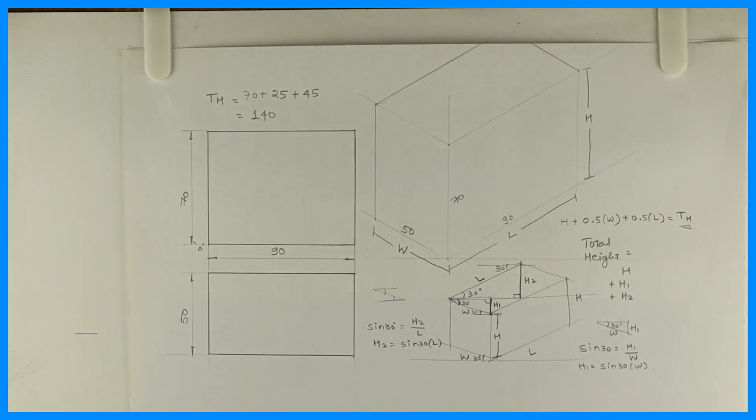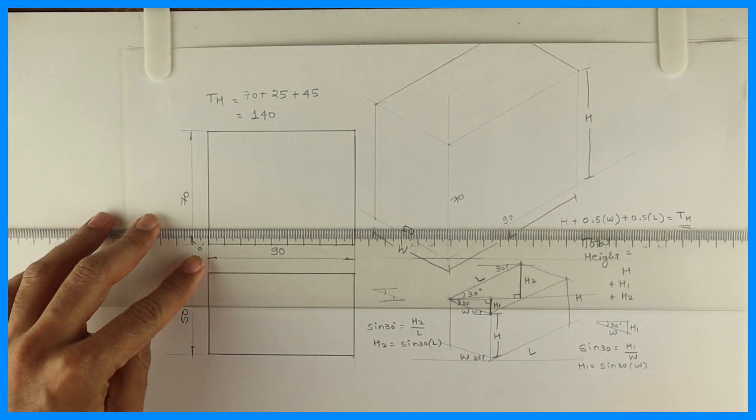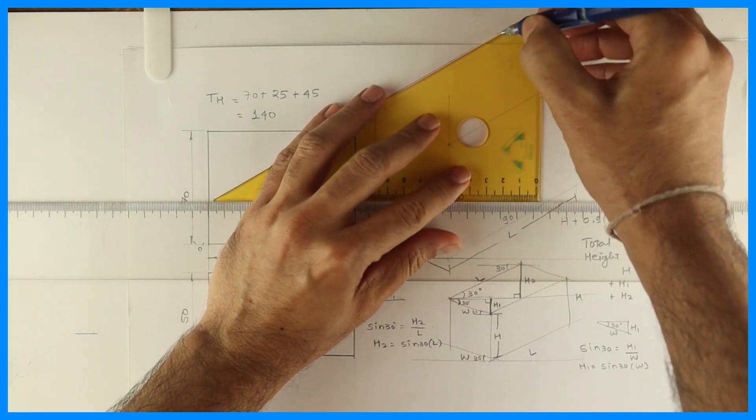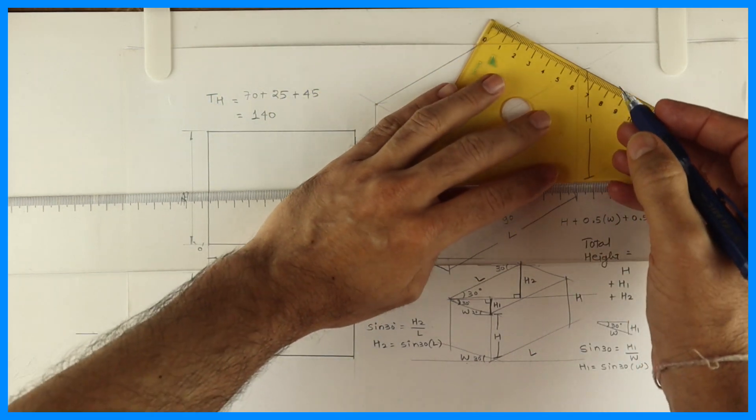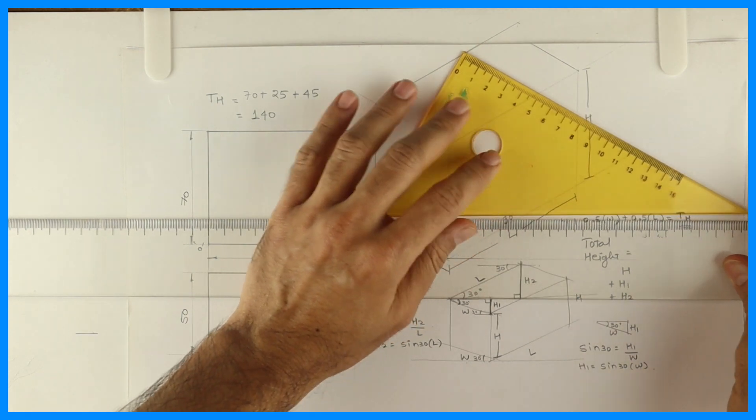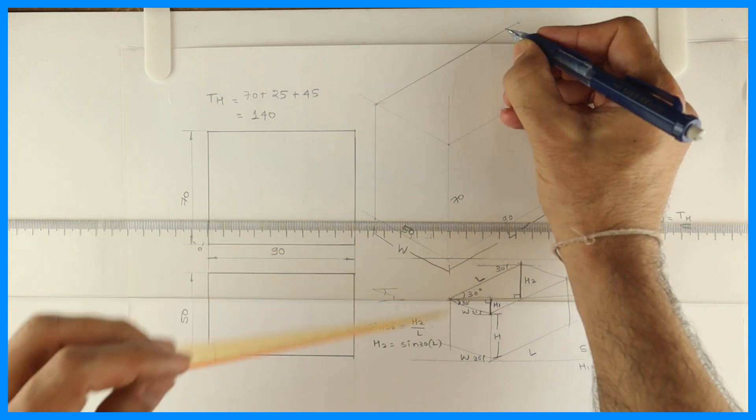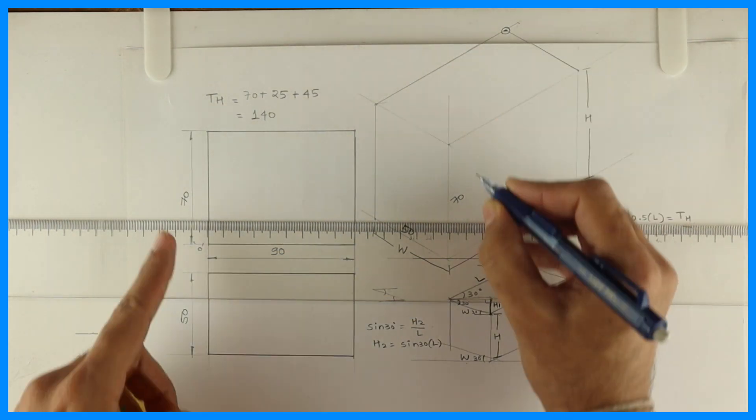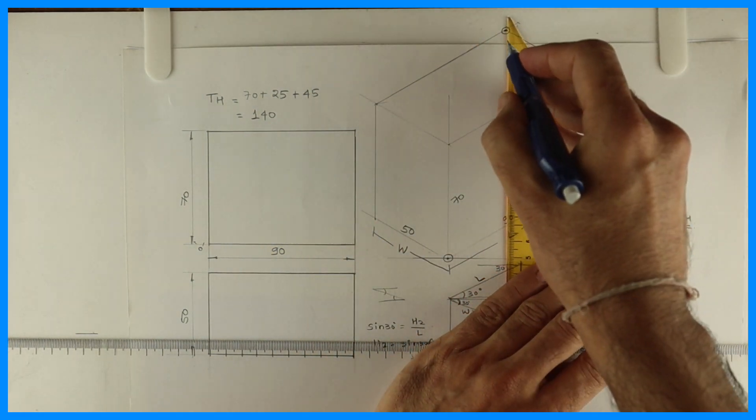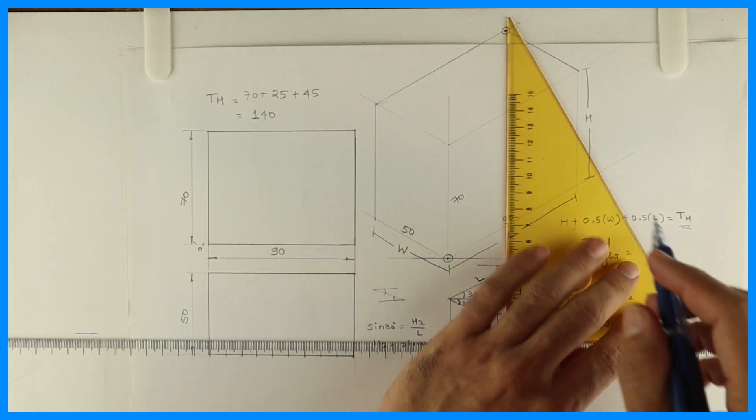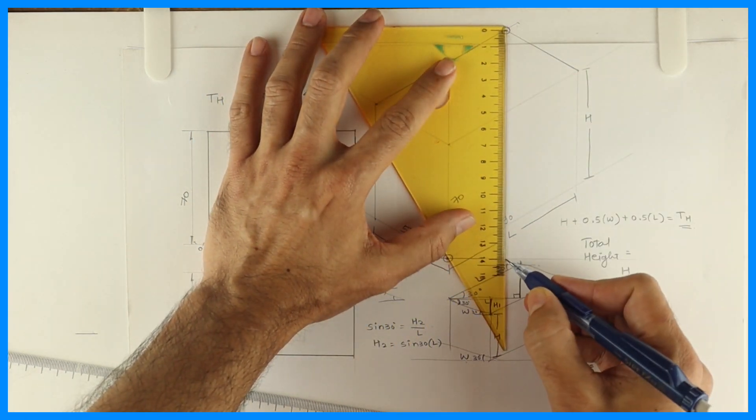So we got total height as 140. So when you are drawing this sum, you should make sure that you should have 140 height from the top. See this. If I am drawing this, so this height is 140.